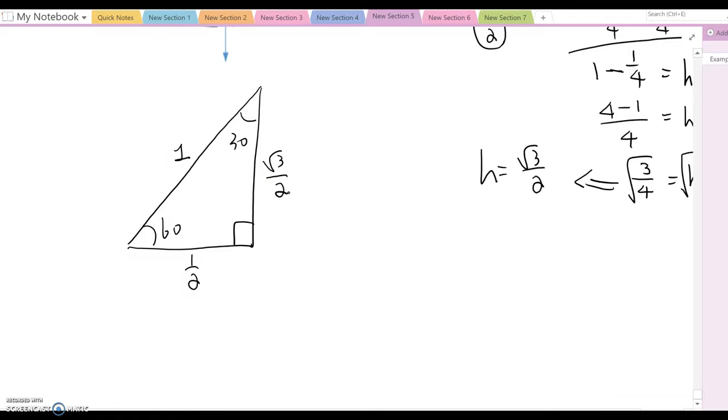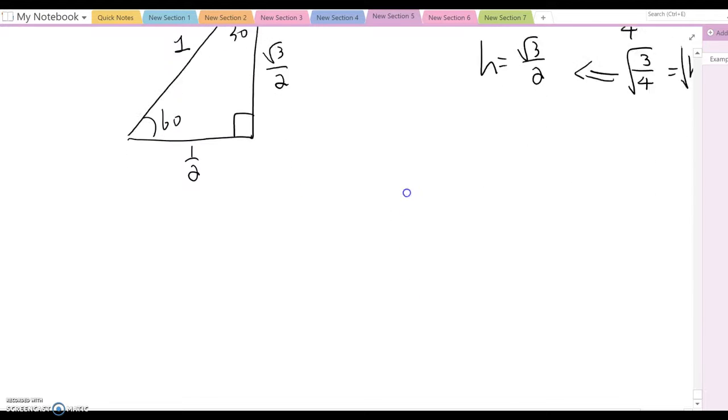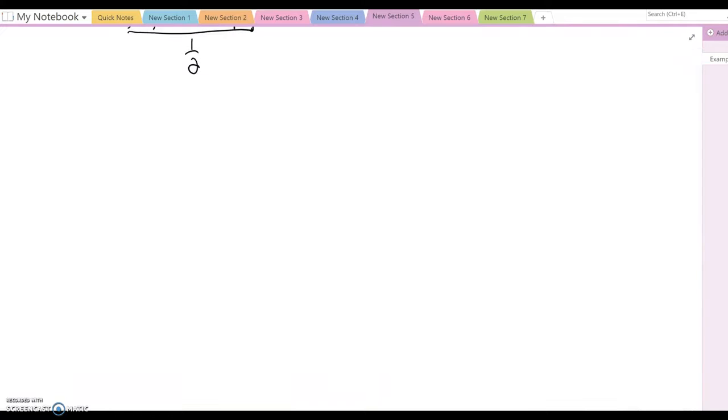That's one special triangle, and then another one. What if this is 90, and those two segments are equal. This one we call isosceles triangle. I am going to make this equal to 1 here. Each side, because sides are equal to each other, so I can put s and s here.